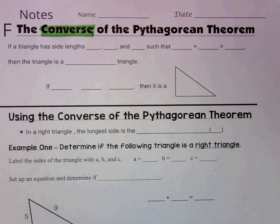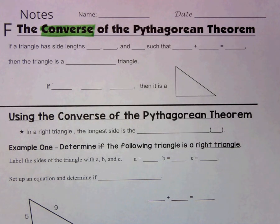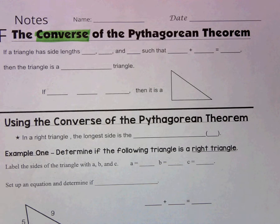Converse is kind of like saying the opposite of. And so what we've seen before is that we use the Pythagorean Theorem, we know something is a right triangle, and we use it to solve for the missing side. Well, what the converse is doing is it tests the triangle to prove whether or not it really is a right triangle.